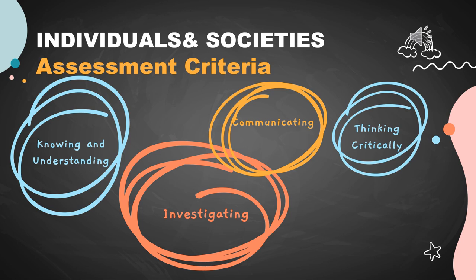Number two is investigating — investigating a global issue based on the concepts and context of the unit. Number three is communicating, which highlights communicating information clearly to the audience, where gesture and tone are clear and effective. Lastly, number four is thinking critically, which highlights extracting the main ideas, events, visual representations, and arguments.